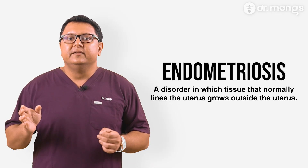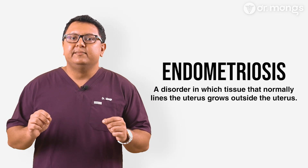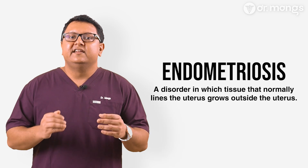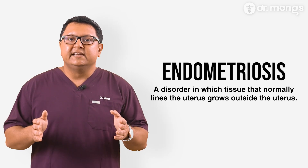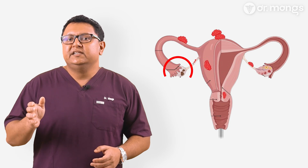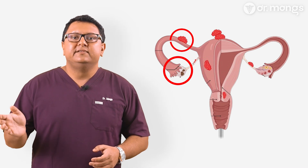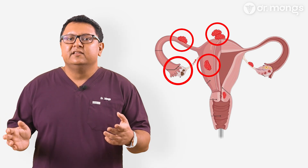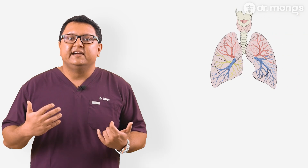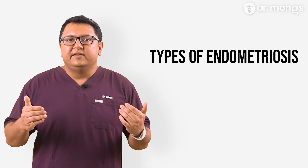Endometriosis is a chronic, often painful condition where tissue resembling the uterine lining grows in the pelvis, abdomen, and virtually anywhere in the body, causing inflammation, scarring and adhesions. This tissue can be found on the ovaries, fallopian tubes, outer surface of the uterus, and other organs within the pelvis and abdomen. In more severe cases, it can even spread to the intestines, bladder, and to areas outside the pelvic region such as the lungs or diaphragm.